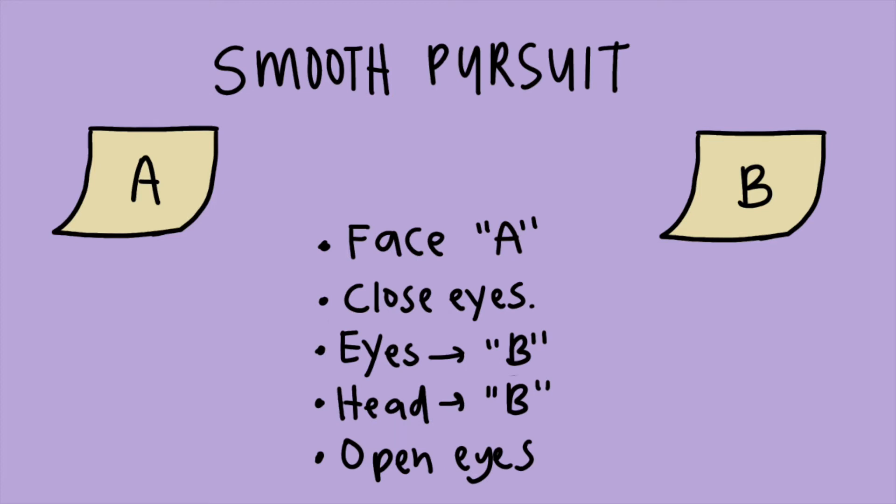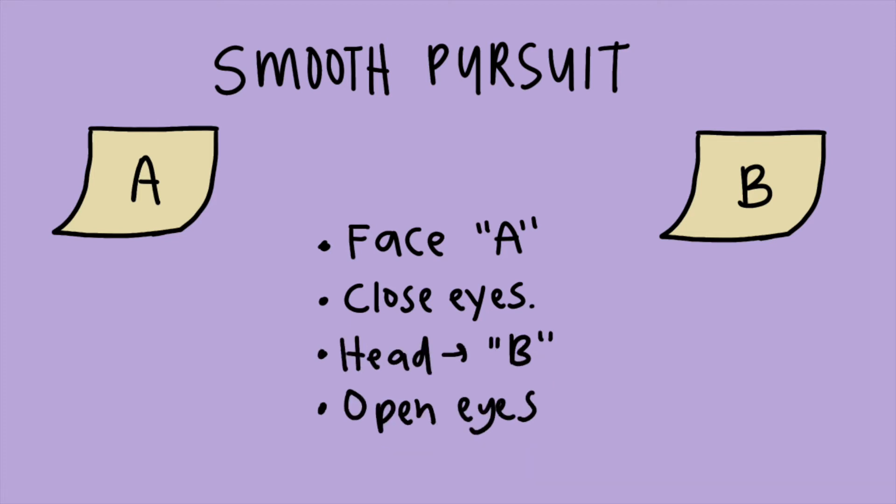For smooth pursuit, you have a couple of options. You can have the patient look at A, close their eyes, turn their eyes to B, then turn their head to B, and then open their eyes to see if they're correct. Or you can have them look at A, close their eyes, turn their head towards B but leave their eyes on A, and then open their eyes to see if they're correct.